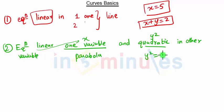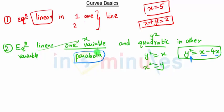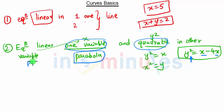Examples of parabolas: y² = x, or x² = y. We can also have y² = x - 4x, which is also a parabola because that equation is linear in x and quadratic in y. So Rule 2: if the equation is linear in one variable and quadratic in the other, it always represents a parabola.